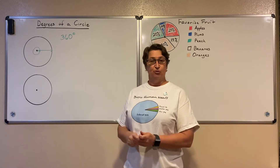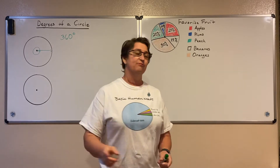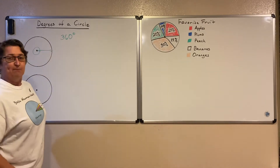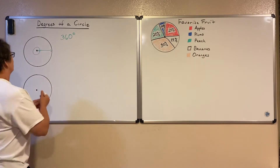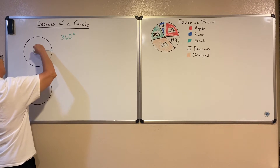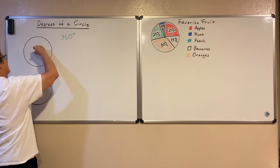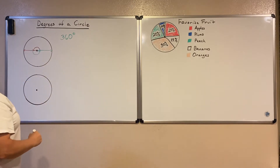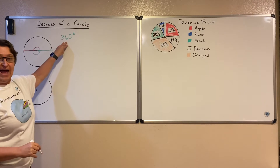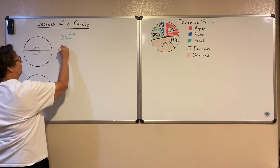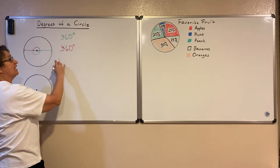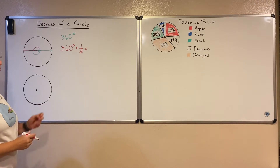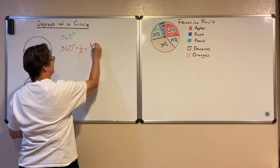Now instead of doing a 360 I'm going to cut that in half — so instead of spinning all the way around I'm just going to spin halfway around. Let's think about what that measurement might be. So I'm just going to go halfway around. I'll take that 360 and cut it in half to find the measure of this angle. I'm going to take 360 and multiply it times one half. Remember when you multiply with fractions you just multiply straight across, so we end up with 360 over 2.